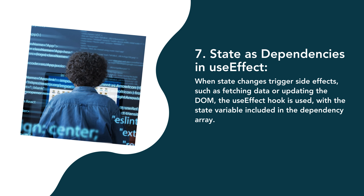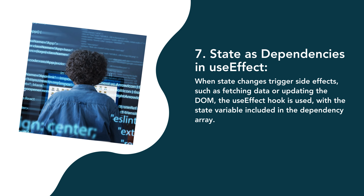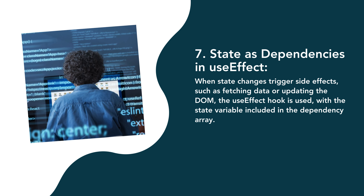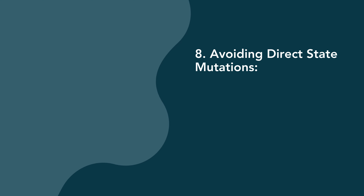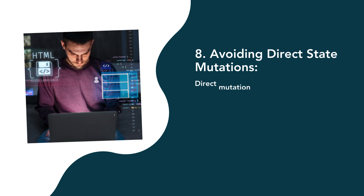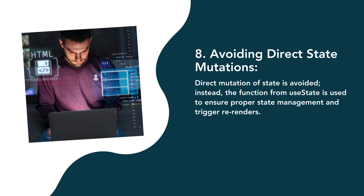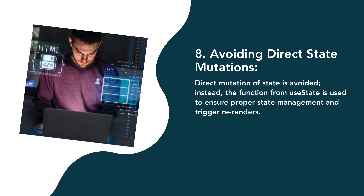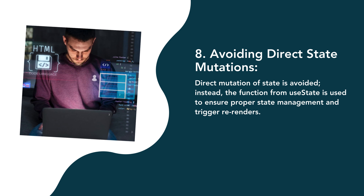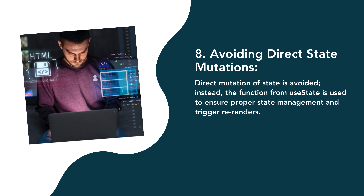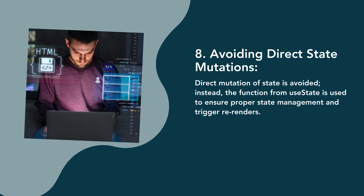When state changes trigger side effects such as fetching data or updating the DOM, the useEffect hook is used with the state variable included in the dependency array. Direct mutation of state is avoided; instead, the function from useState is used to ensure proper state management and trigger re-renders.